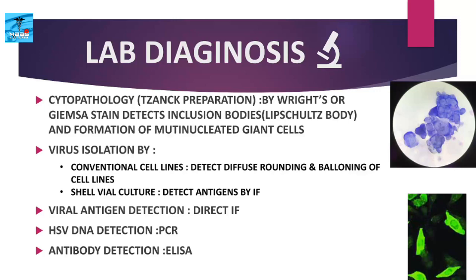In laboratory diagnosis, cytopathological changes can be identified using Tzanck smear preparations. Scrapings obtained from the base of the lesion are stained with Giemsa or other stains. The cytopathological changes detectable include inclusion bodies called Lipschutz bodies and the formation of multinucleated giant cells. A Tzanck smear preparation showing multinucleated giant cells is shown in the figure.